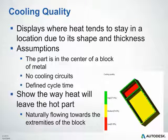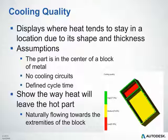Cooling analysis also provides a cooling quality plot, which displays where heat tends to stay in a location due to the shape and thickness of the part. The assumptions are that the part is in the center of a block of metal with no cooling circuits and a defined cycle time. Green areas have an efficient amount of cooling, yellow areas could be improved, and red areas show poor cooling that needs further investigation or focused additional cooling.